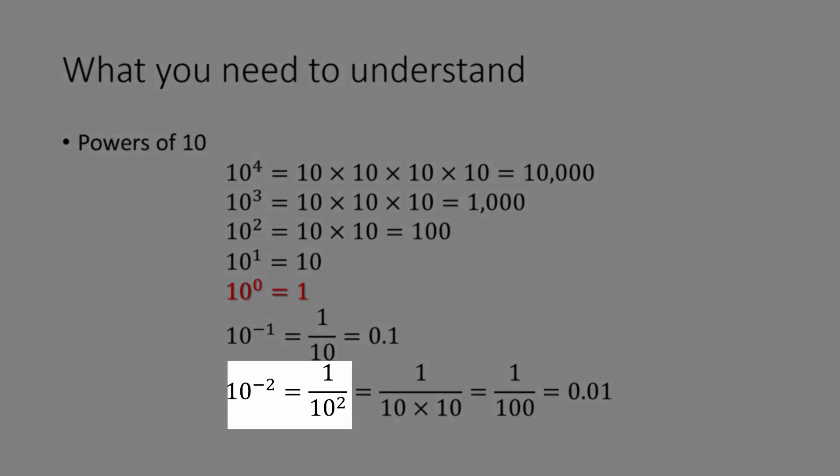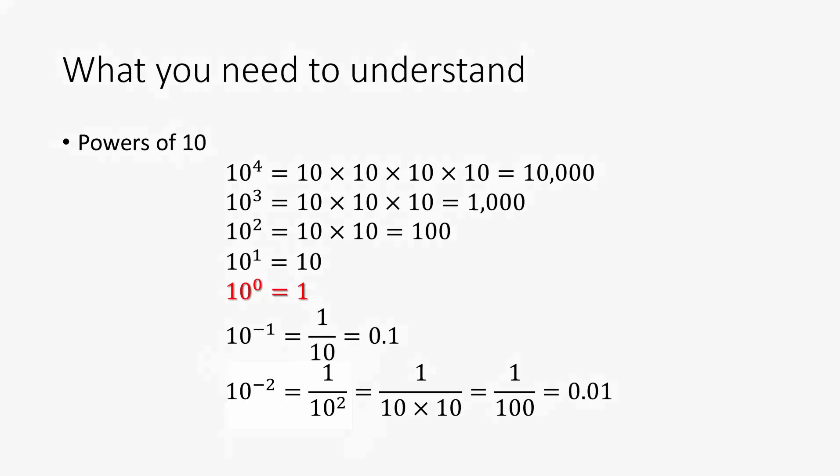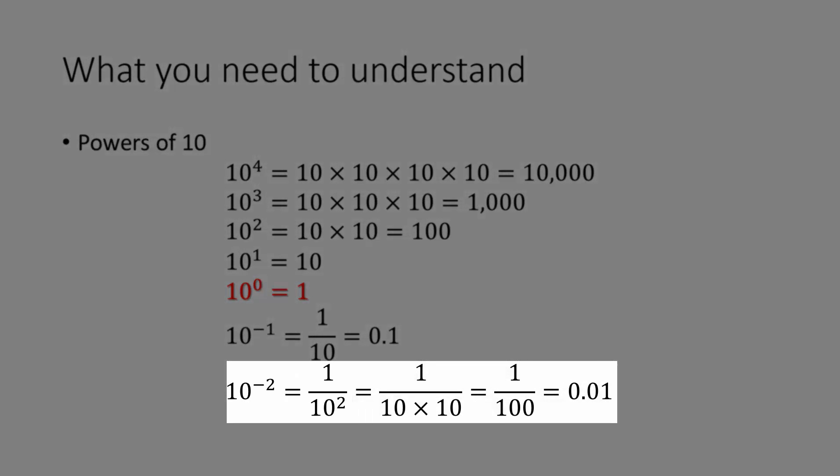10 to the negative 2nd power is telling you to move 10 squared to the other side of the fraction bar. This means we have 1 over 10 times 10, or 1 100th, which is 0.01 in decimal form.